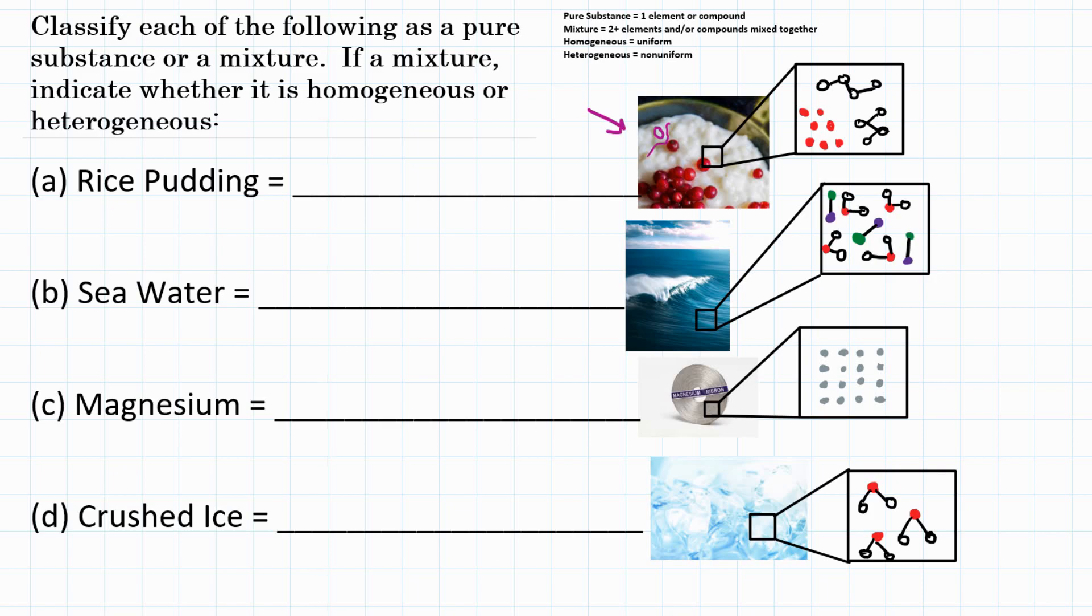You can see those different phases, sometimes different colors. And you can clearly see that there are multiple different things there. So that tells you that it is a heterogeneous mixture.